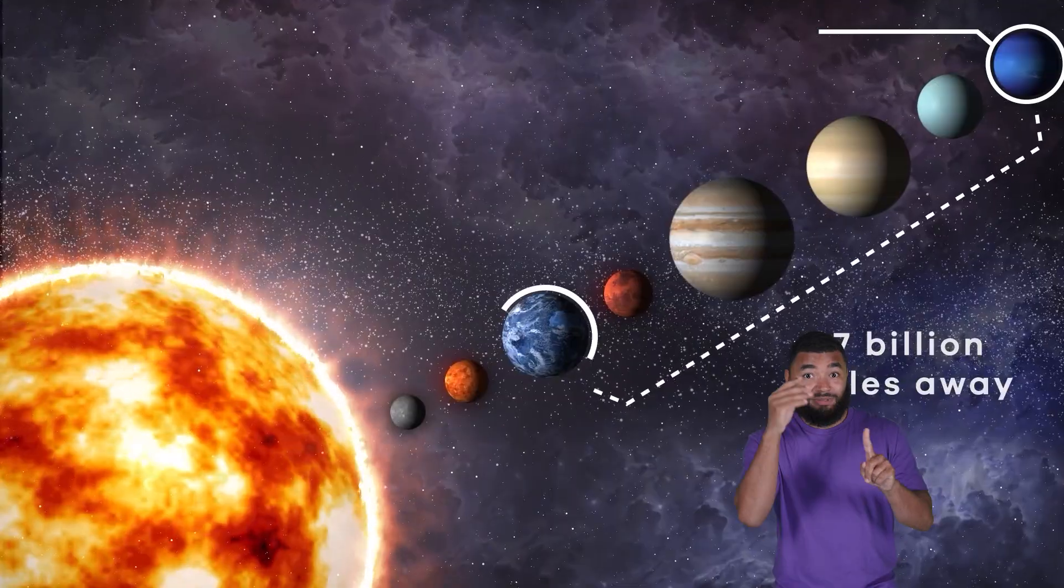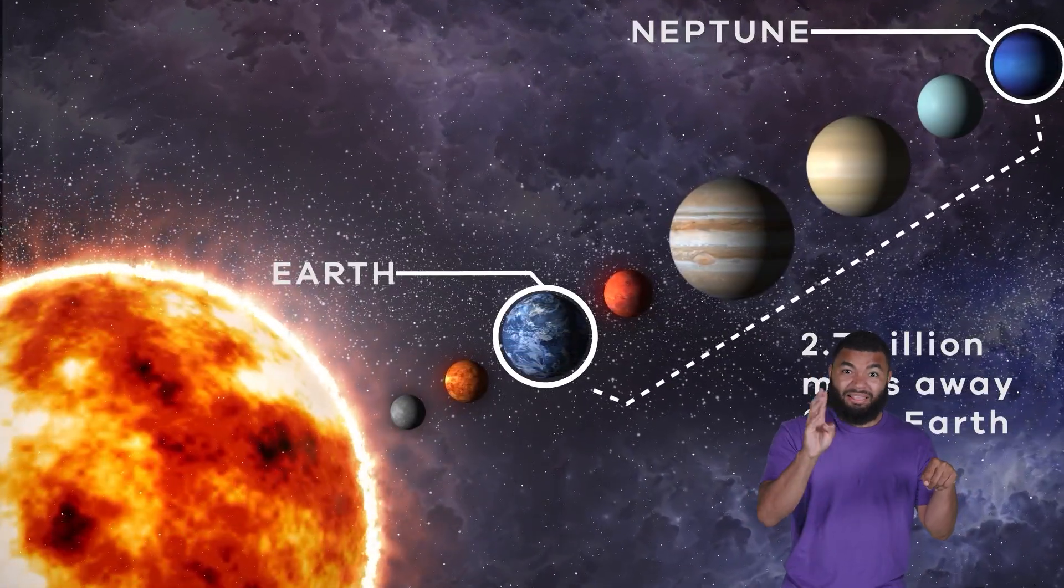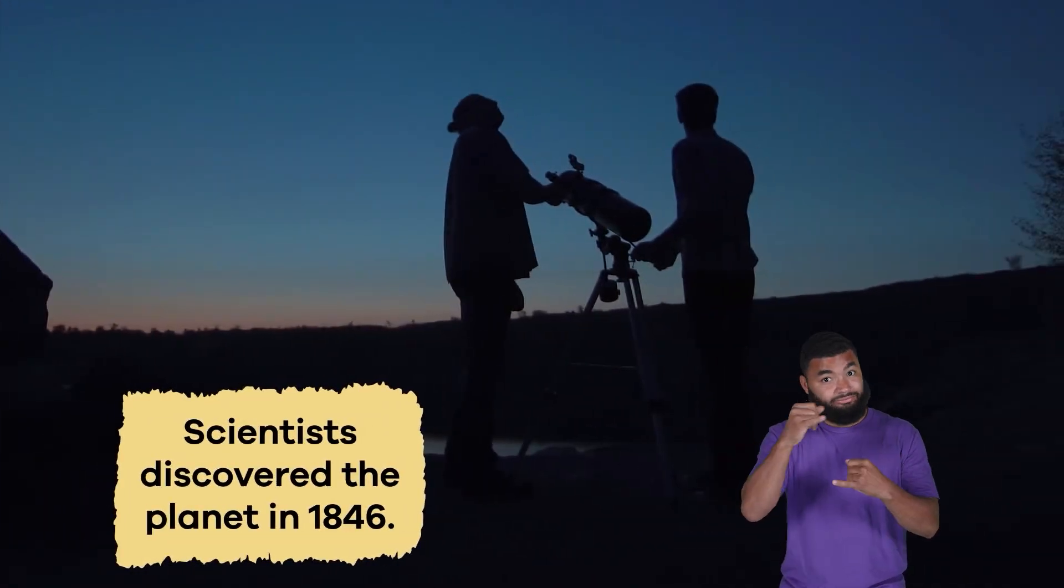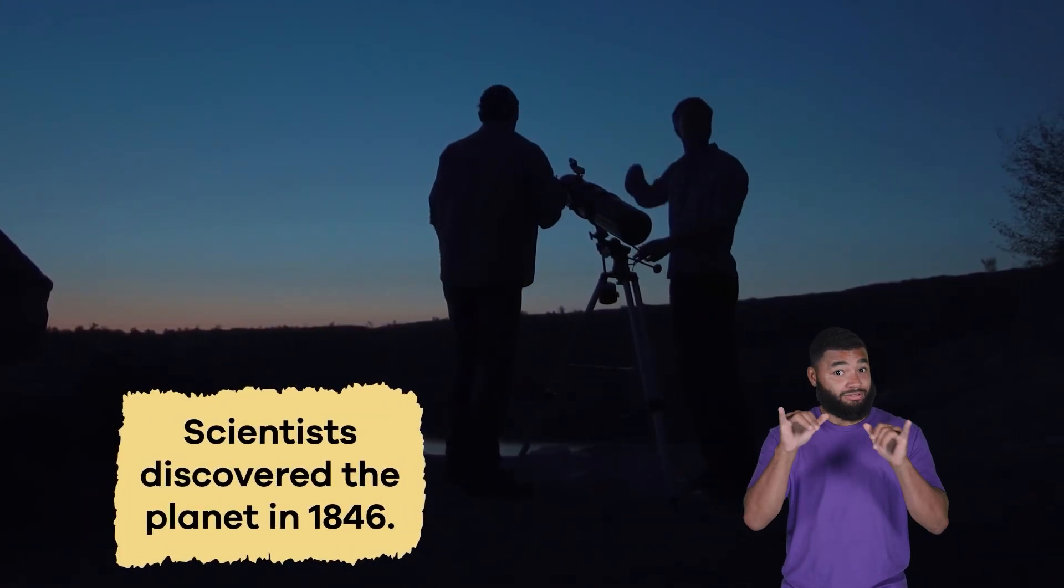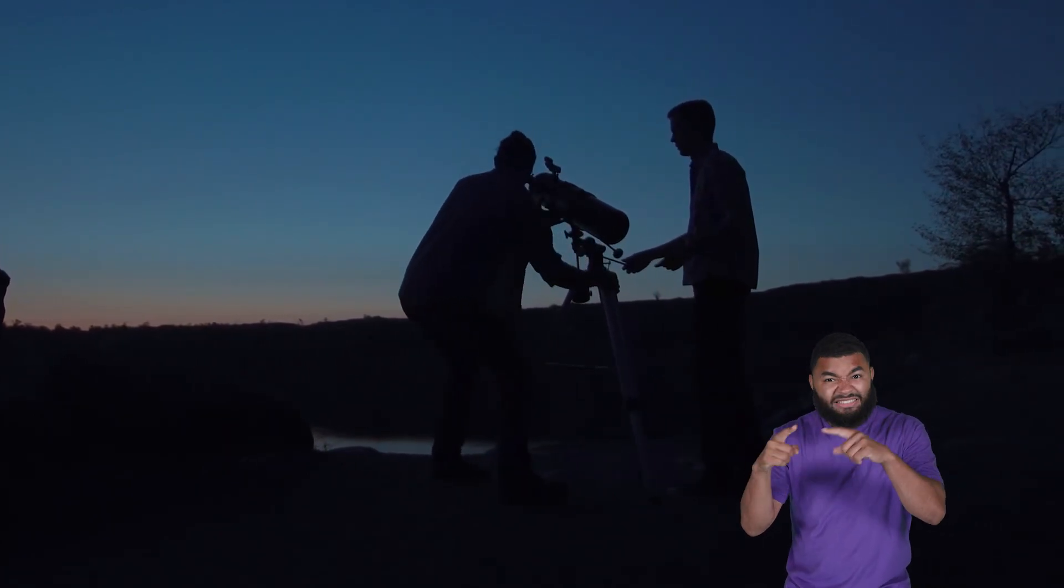Over 2.7 billion miles away from Earth, Neptune is the last planet in our solar system. Scientists discovered the planet in 1846 and were amazed at how different it was from the planets closer to the Sun. Its vibrant blue color inspired its name. Neptune is the Roman god of the sea.